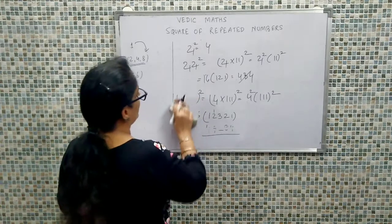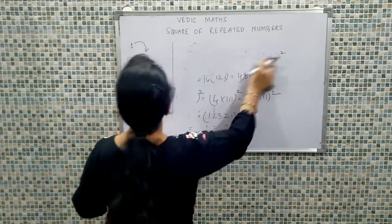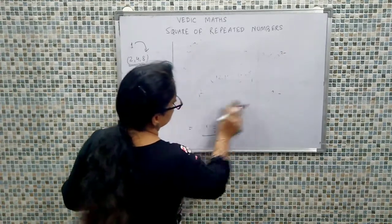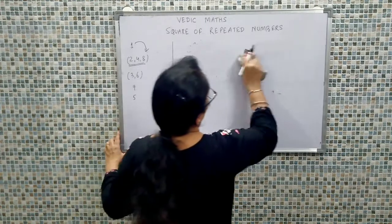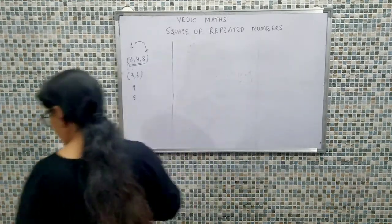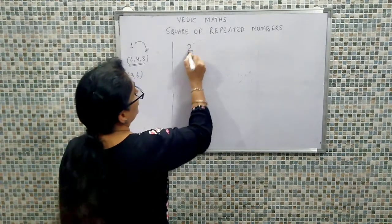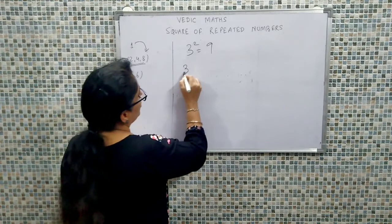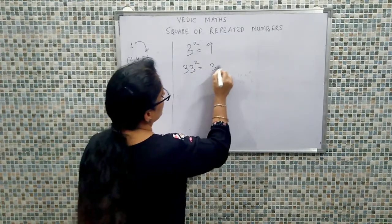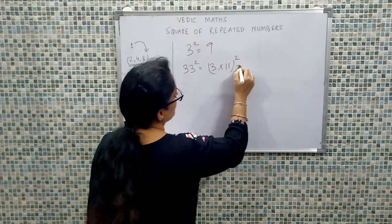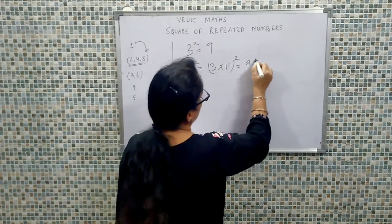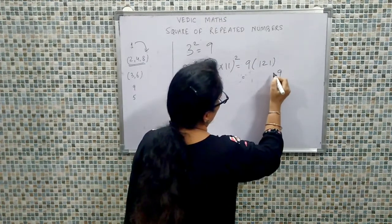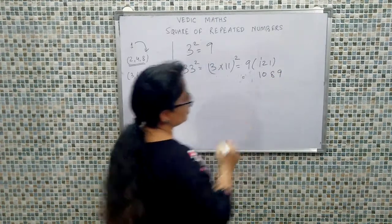Next, we'll calculate square of repetitive values of 3. Agar hume three ka square nikaalna ho, three square is nine. Agar hume 33 ka square nikaalna ho, hum likhenge three into eleven ka square. Three ka square is nine, and eleven ka square is 121. So this will be nine, eighteen, nine — which gives us 1089.